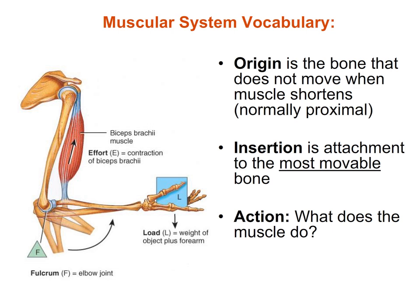For example, if we look at the biceps brachii muscle, you can see it has two connection points — one proximal, up close to the scapula, and the other distal, on the radius. The origin would be along the scapula, since the scapula area is the least mobile when the biceps contracts. When the biceps contracts, the elbow flexes, bringing the forearm closer to you. So the radial tuberosity will be the insertion for the biceps brachii.